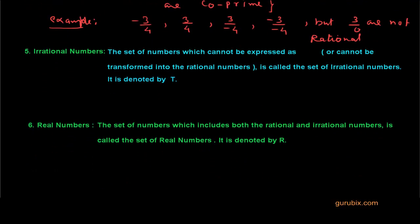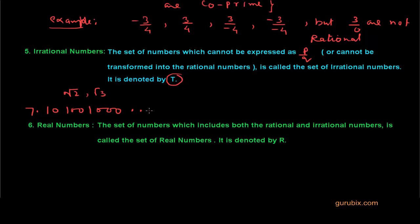Let us move to irrational numbers. This is a very important part of real numbers. Irrational numbers are numbers which cannot be expressed in P by Q form — that is, they cannot be written like 3 by 4 or similar fractions, and cannot be transformed into rational numbers. They are denoted by capital T. For example, root 2 and root 3 are irrational, as are non-repeating, non-terminating decimals, such as 7.10100100100... and numbers like this.